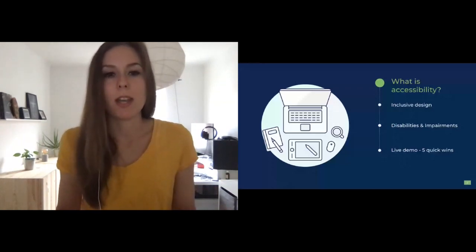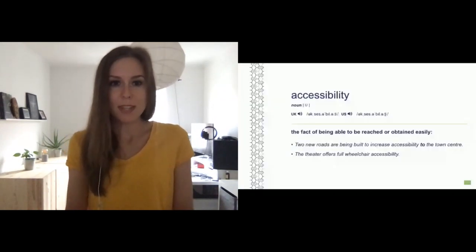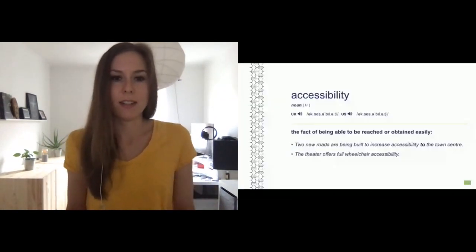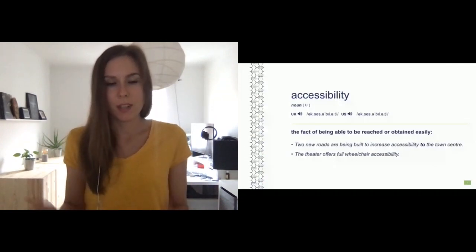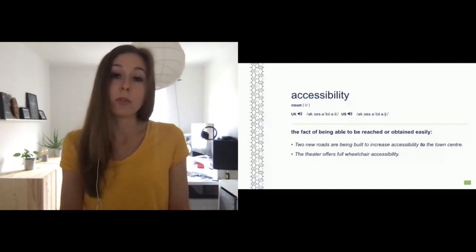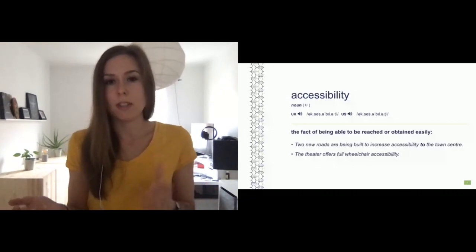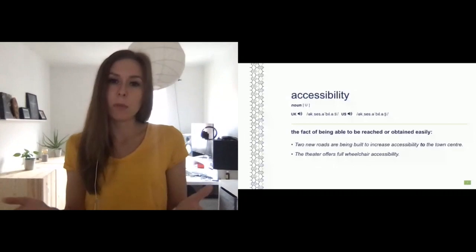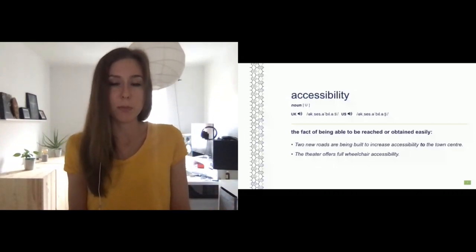Let's start by looking at the definition of accessibility: 'Accessibility is the fact of being able to be reached or obtained easily.' Accessibility in the physical world means making something usable to as many people as possible. When we're talking about web accessibility it's basically the same — it's about making a website accessible and usable for as many people as possible.